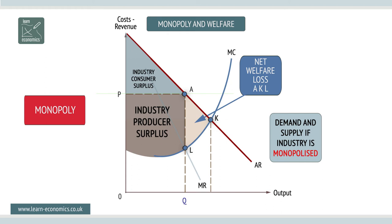So what can be done? Options range from opening up the market to competition, price capping, imposing regulations, deregulating if the monopoly is state-controlled, and even nationalization where the state takes over ownership and control.